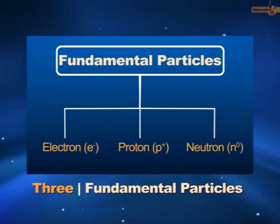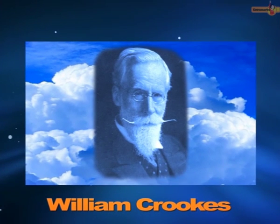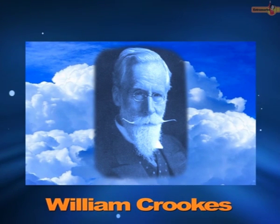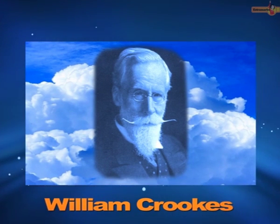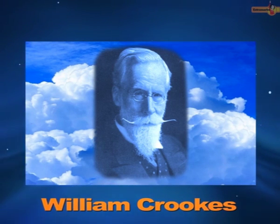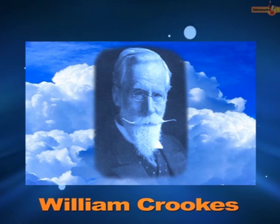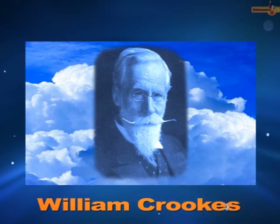Let's go through the events that led to the discovery of electron. William Crookes studied the conduction of electricity through gases at low pressure and high voltages in partially evacuated tubes called cathode ray discharge tubes or Crookes tubes, and discovered cathode rays.